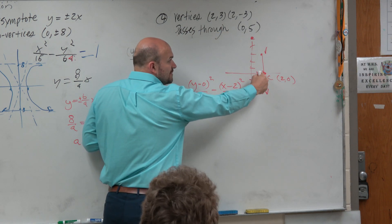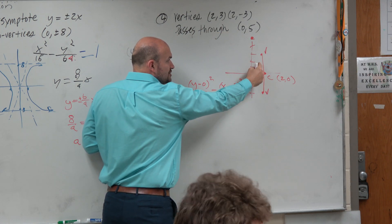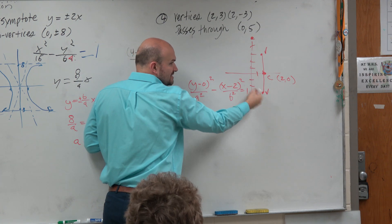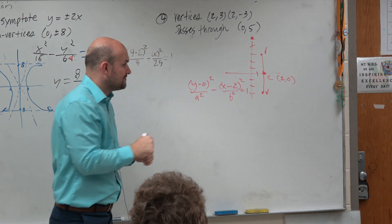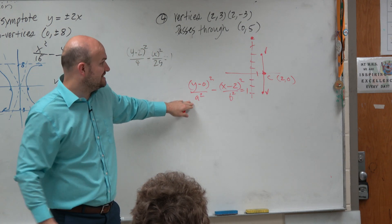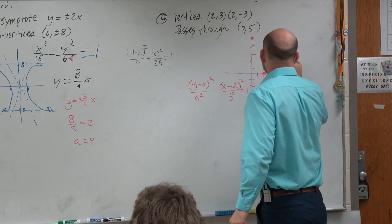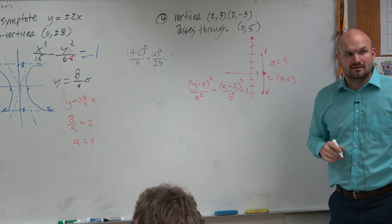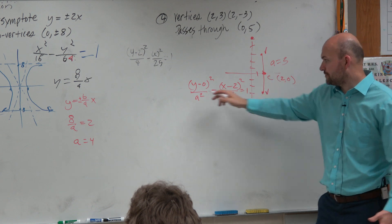So a represents the distance from your center to your vertices, 1, 2, 3, right? Or 1, 2. It doesn't matter which direction. It's the distance. So a is equal to 3. Thankfully, I plotted this. So therefore, I can visually see that a is equal to 3.